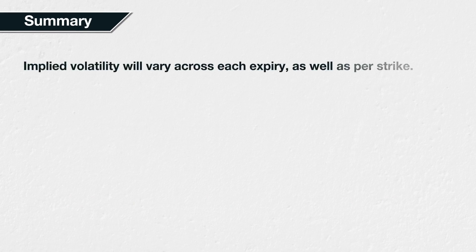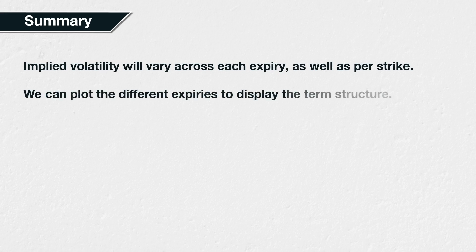In summary, as well as varying per strike across a given expiry, implied volatility will also differ between each of the available expiries as well. Plotting these figures for the at-the-money options gives us the volatility term structure. This allows us to see the market's view of future volatility by date.